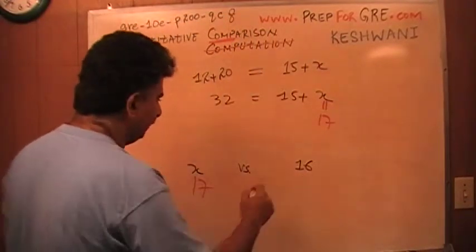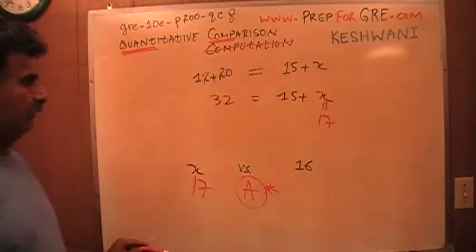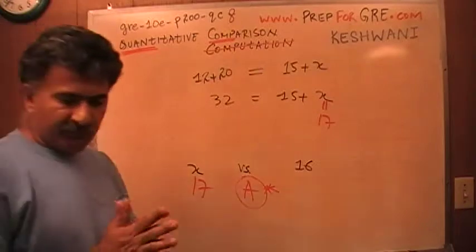So X is 17. This is 16. The answer is A. That's all. That's all it is. I hope you found this helpful.